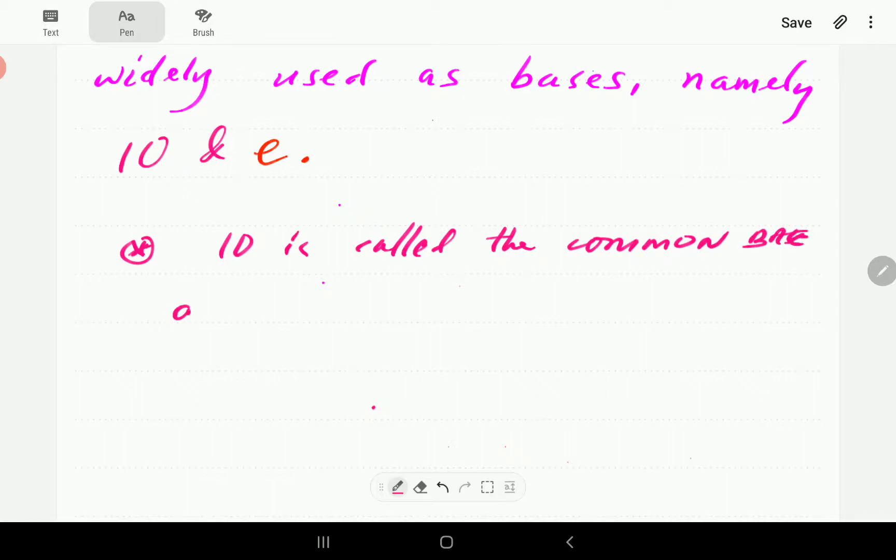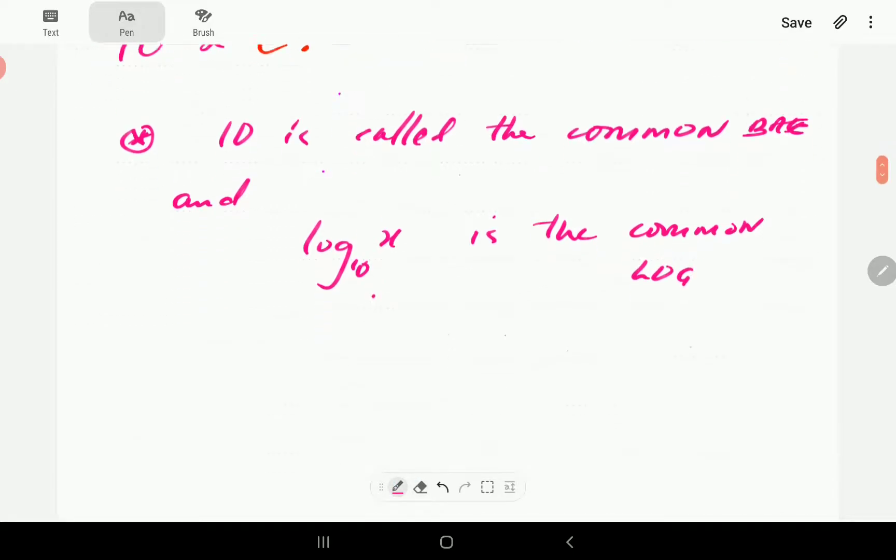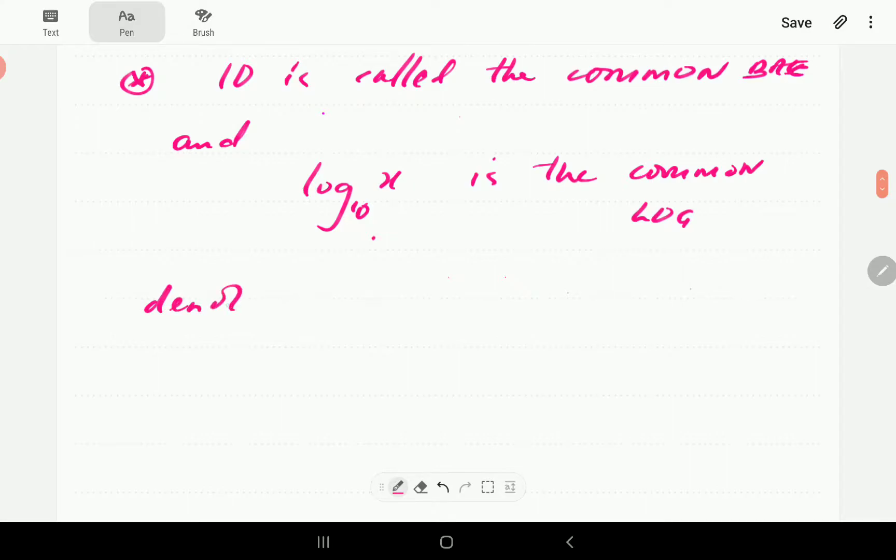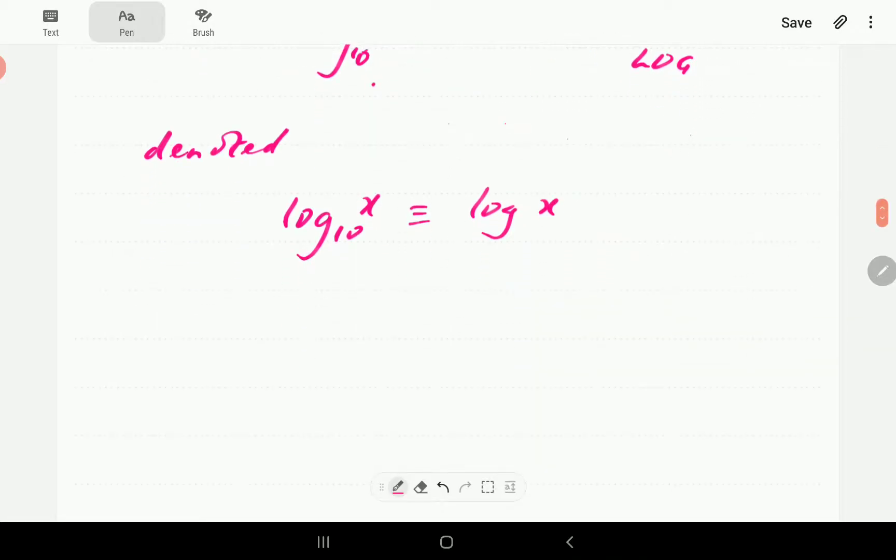When we write logarithms to base 10, log x to base 10 is called the common logarithm. There is actually a special notation for the common logarithm. Log x base 10, we can simply write as log x. If you come across a log expression and there is no number in the position of the base there, then you must know that the base is 10.